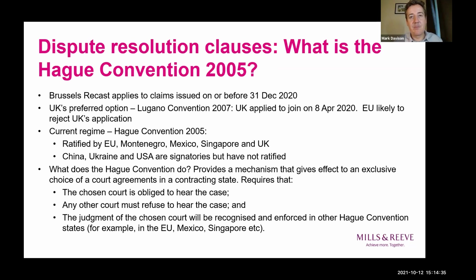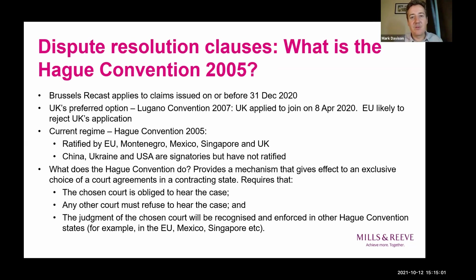The object of the Hague Convention is to promote international trade and investment through enhanced judicial cooperation. To date, there has been little attention as to how it works, particularly before the end of last year. That's because it had limited applicability given that the Brussels Recast and Lugano regimes were in place, and the Brussels Recast regime took precedence over the Hague Convention when both were in play.